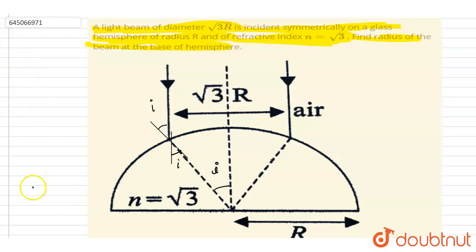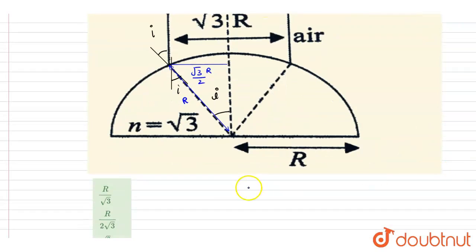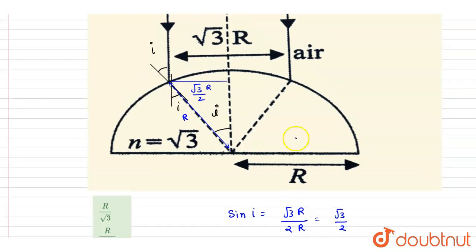The total beam diameter is √3r, so the half-width is √3r/2. The radius of the hemisphere is r. Therefore, sin i = perpendicular/hypotenuse = (√3r/2)/r = √3/2, which gives angle of incidence i = 60°.